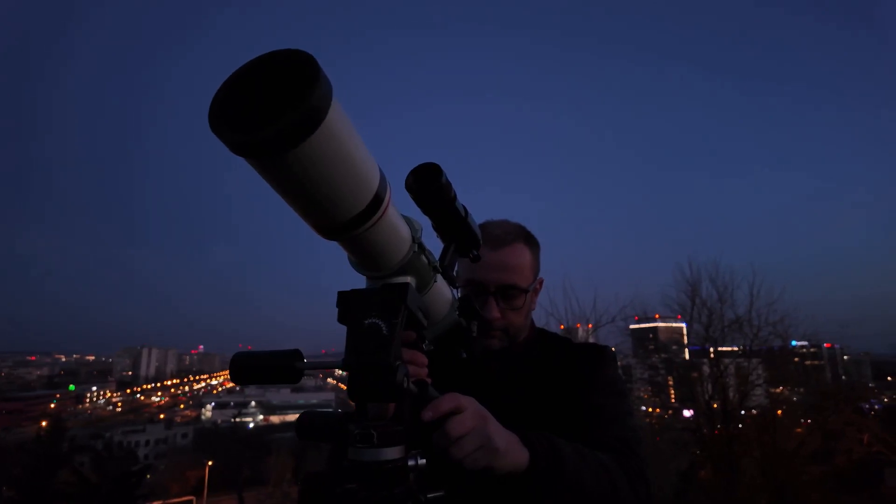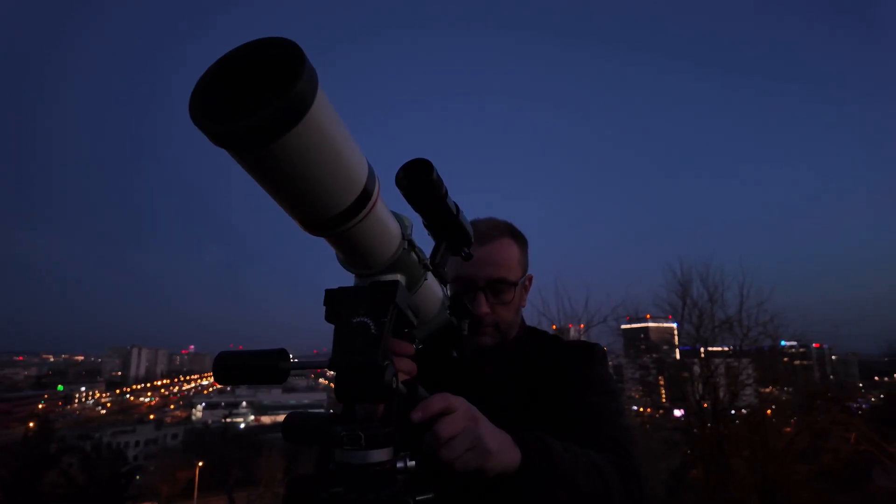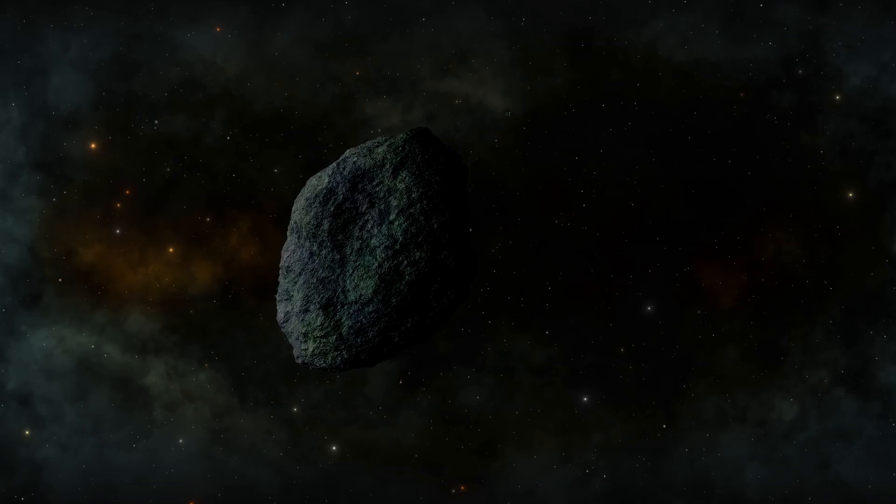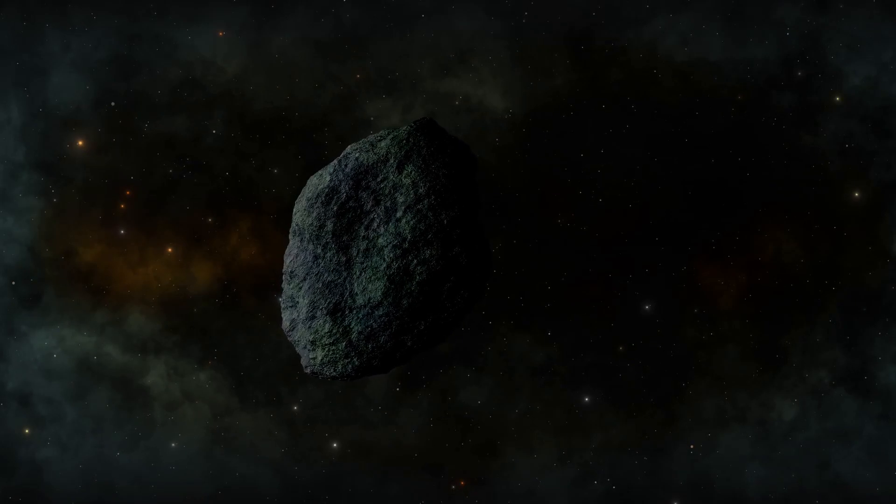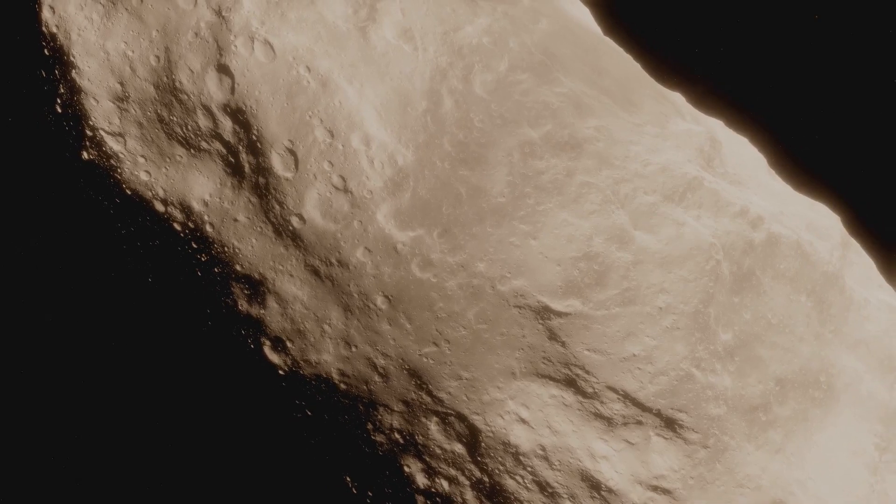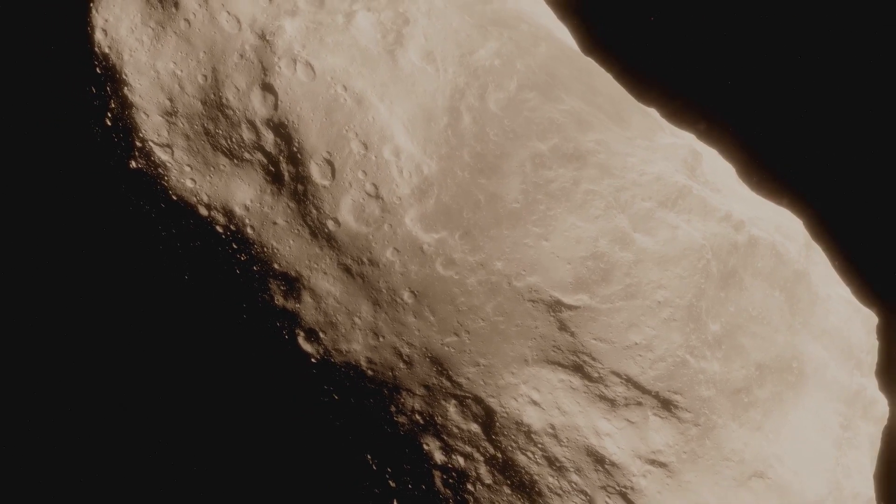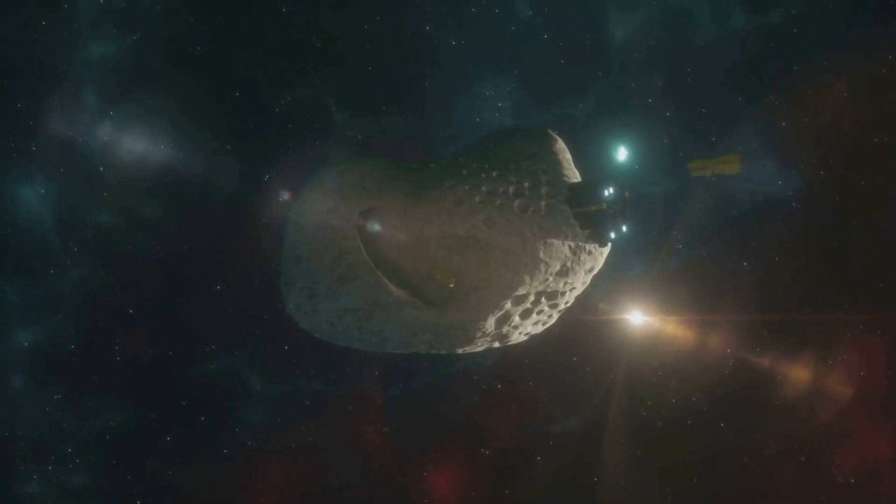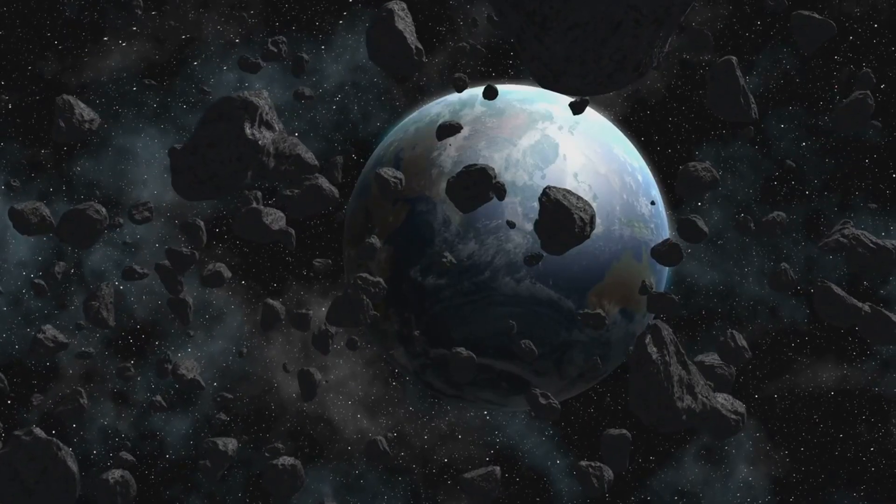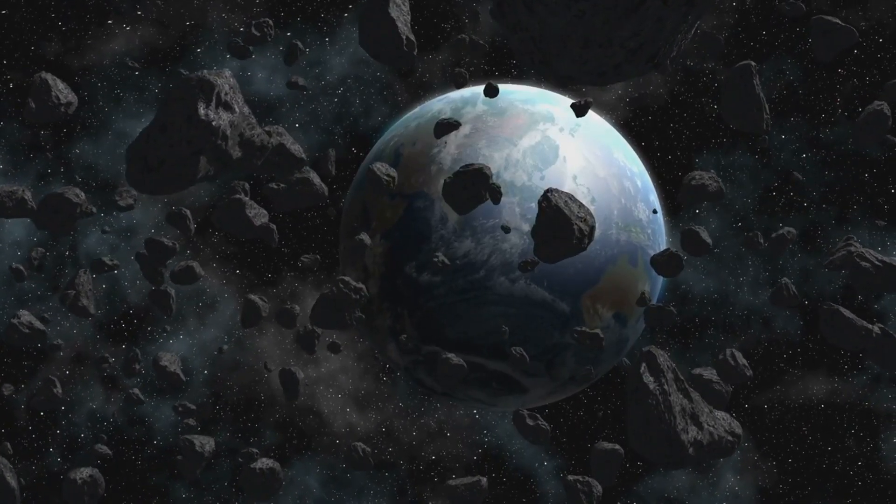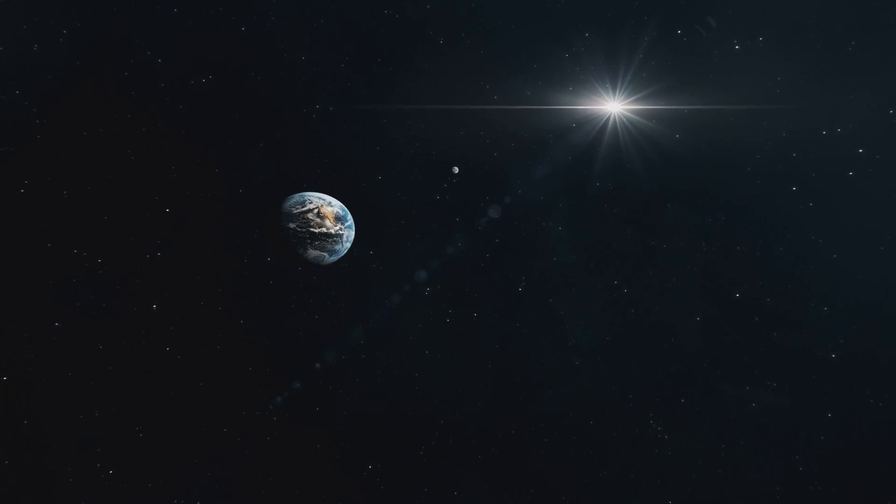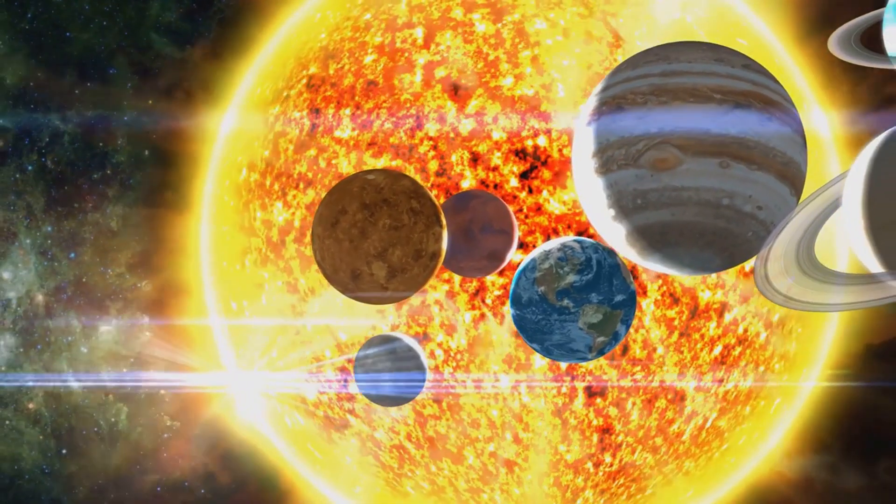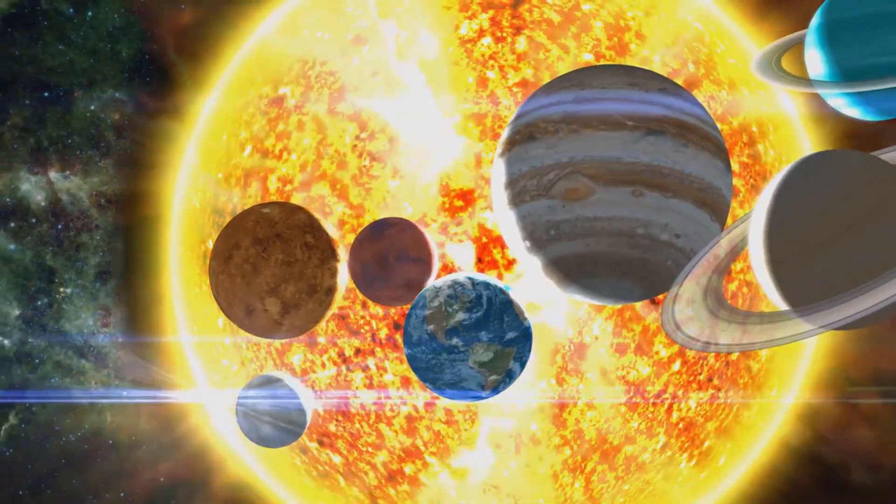Near-Earth objects like 2024 PT5 are cosmic time capsules. They hold clues to the composition of the early solar system. By studying their makeup, we can piece together the history of our cosmic neighborhood. These objects also help us understand the dynamics of our solar system. By studying their orbits, we learn about gravitational interactions. We gain insights into the complex dance of planets, moons, and asteroids.